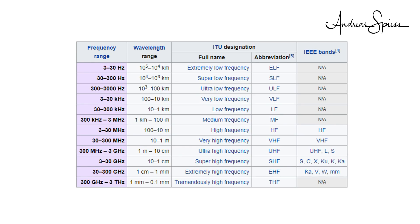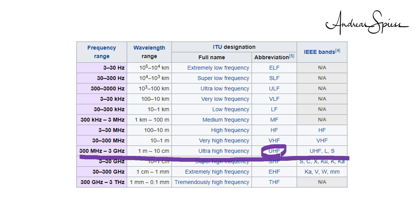Here you see the names for the different frequency ranges for carrier frequencies. The band from 300 MHz to 3 GHz, for example, is called the UHF band. But which frequency is best? The answer, unfortunately, is: it depends. Let's look at the aspects it depends on.